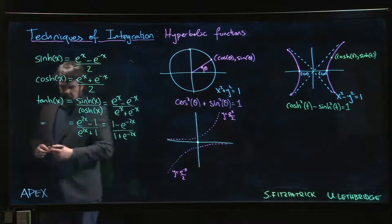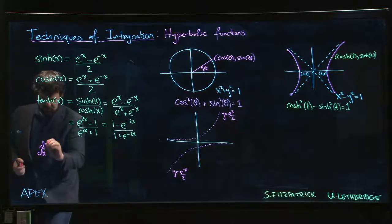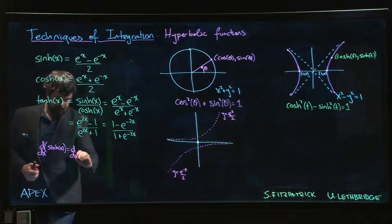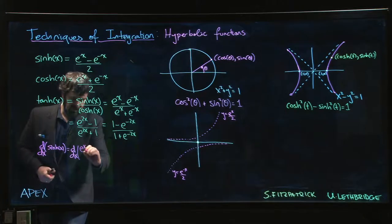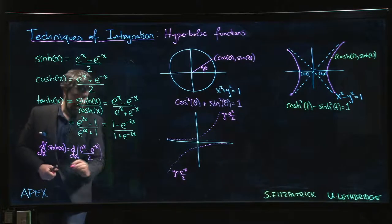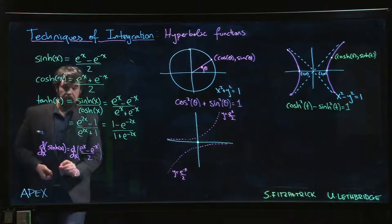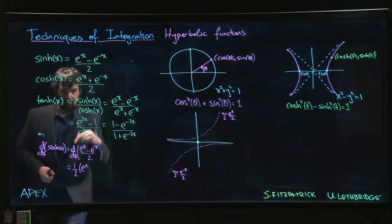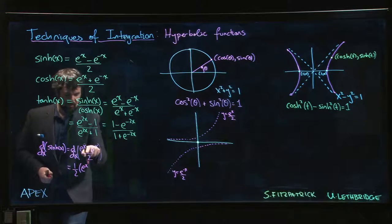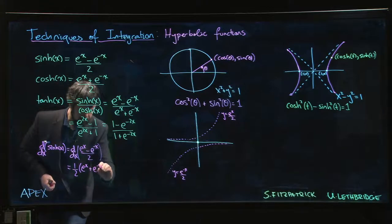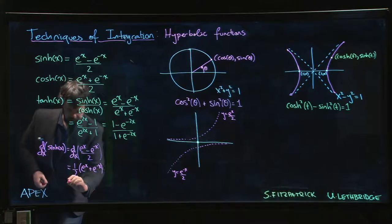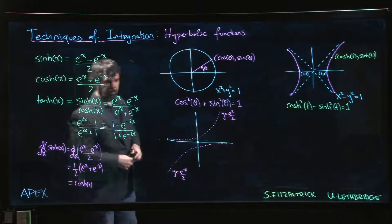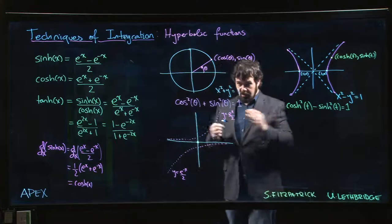And so here's an interesting thing: what do you get when you take the derivative of the hyperbolic sine function? Well, you have (e^x - e^(-x))/2. That 1/2 is a constant multiple we can bring up front. Derivative of e^x is e^x. The derivative of e^(-x) is e^(-x) with a minus sign: minus e^(-x). Minus minus becomes plus, and interestingly enough, what you get is hyperbolic cos.